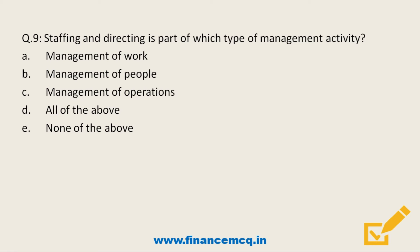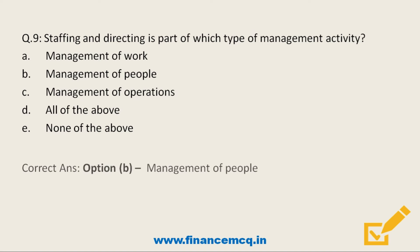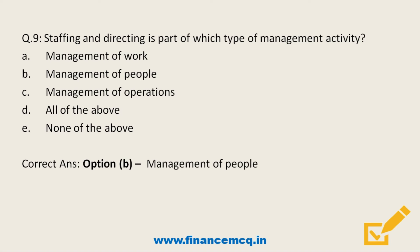Next question: staffing and directing is a part of which type of management activity? Option A: management of work. Option B: management of people. Option C: management of operations. Option D: all of the above. The correct answer is Option B — management of people.